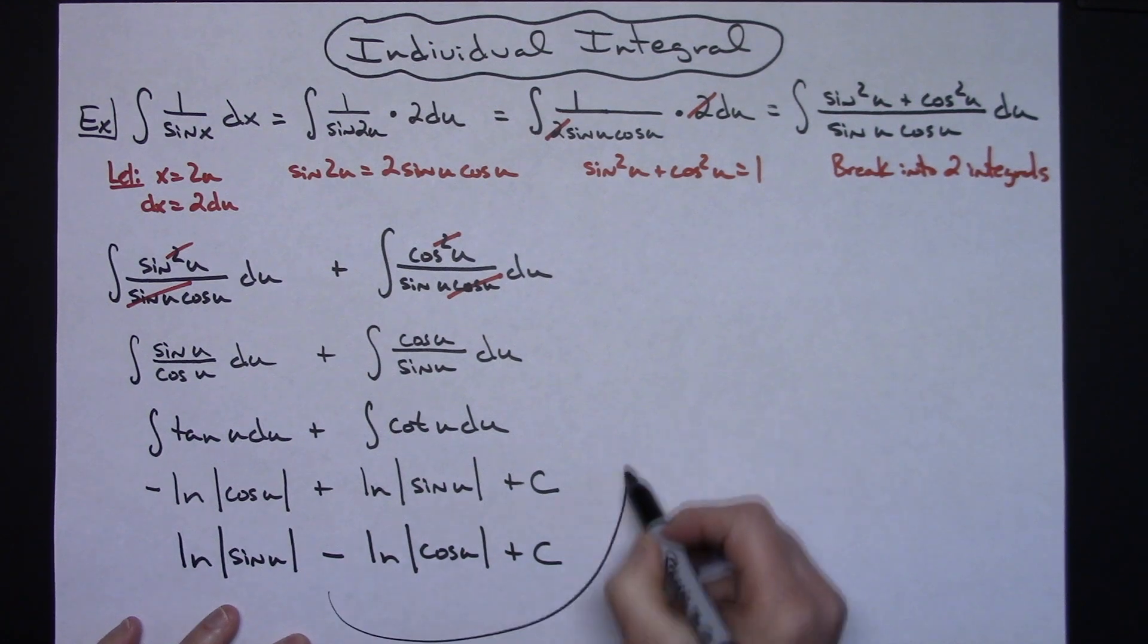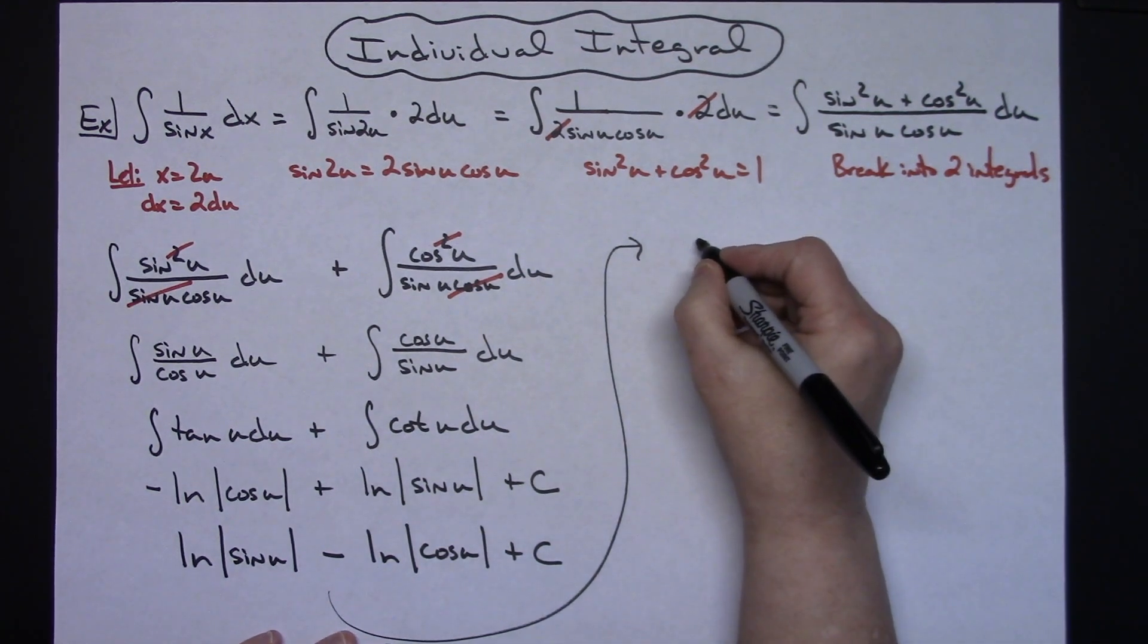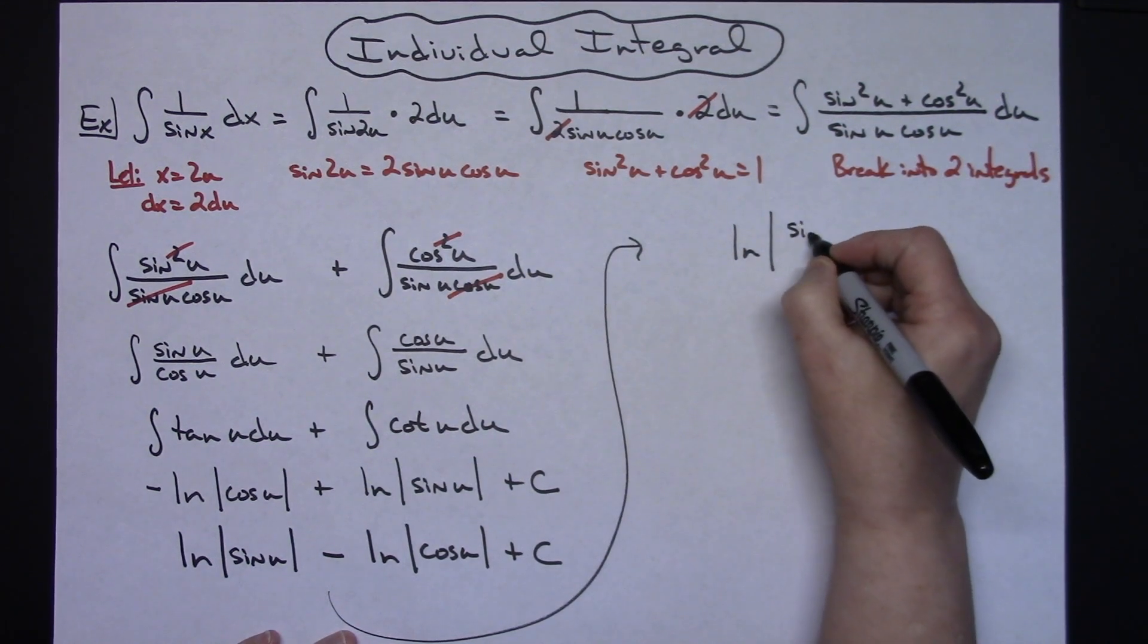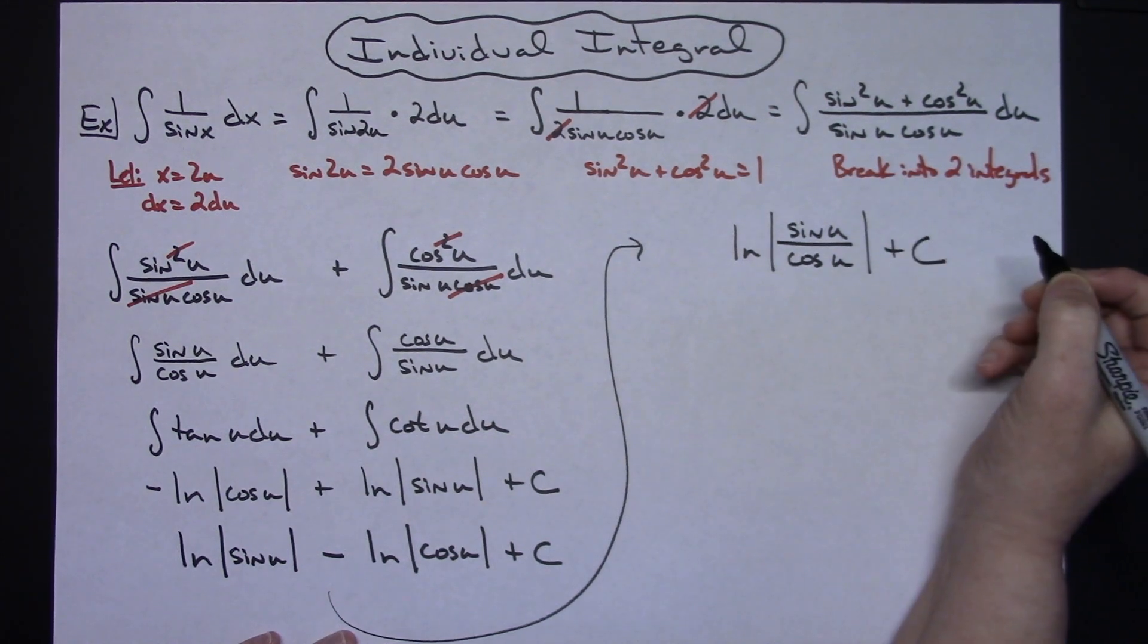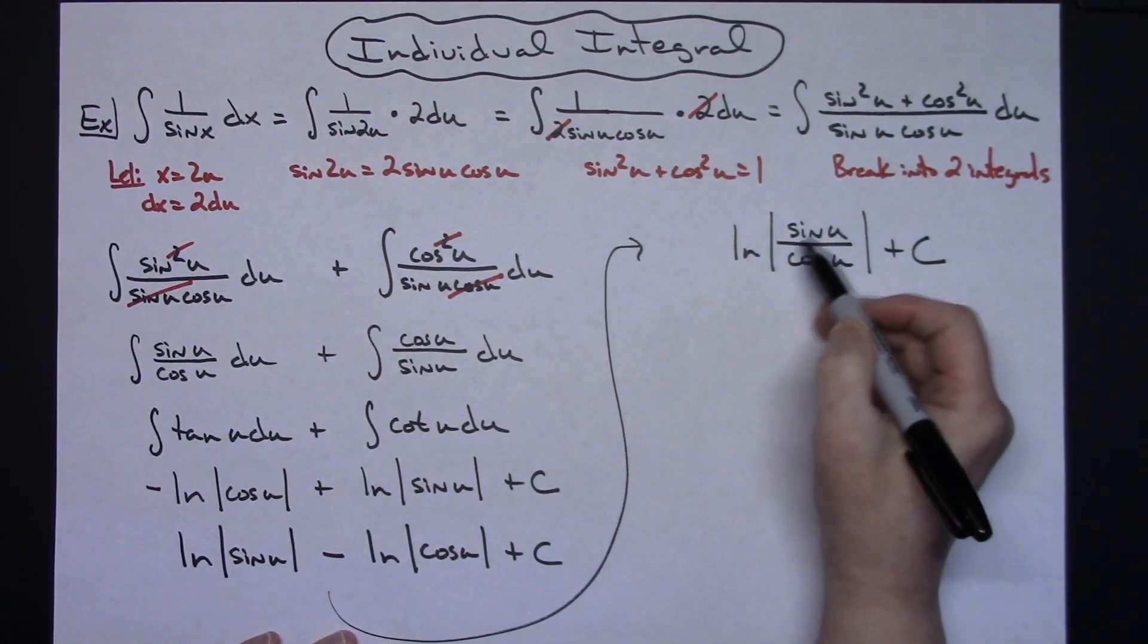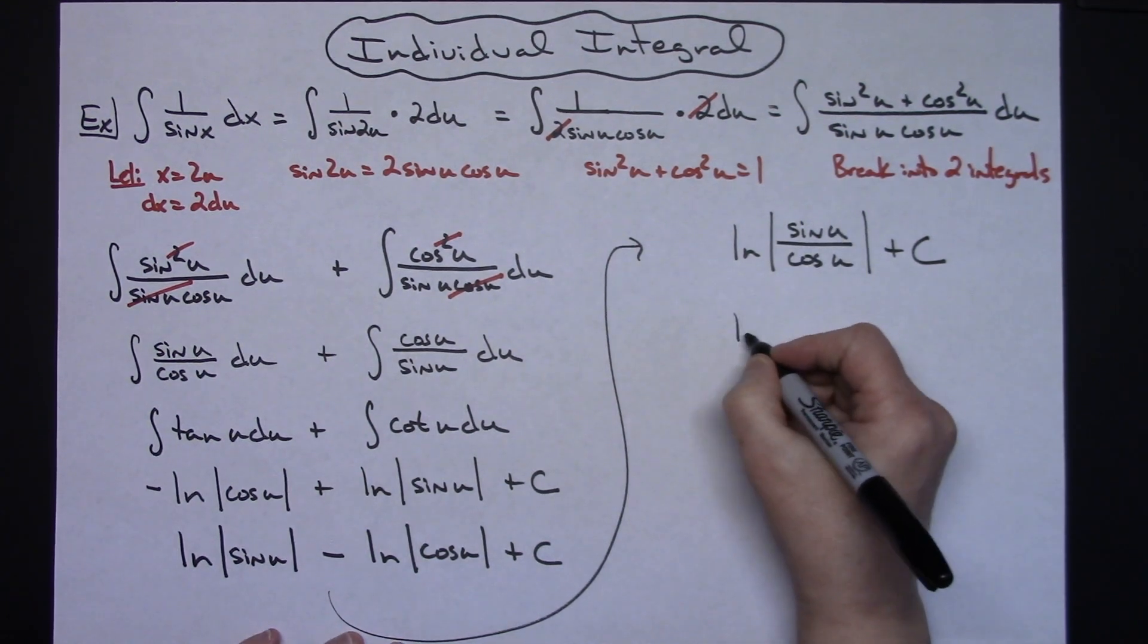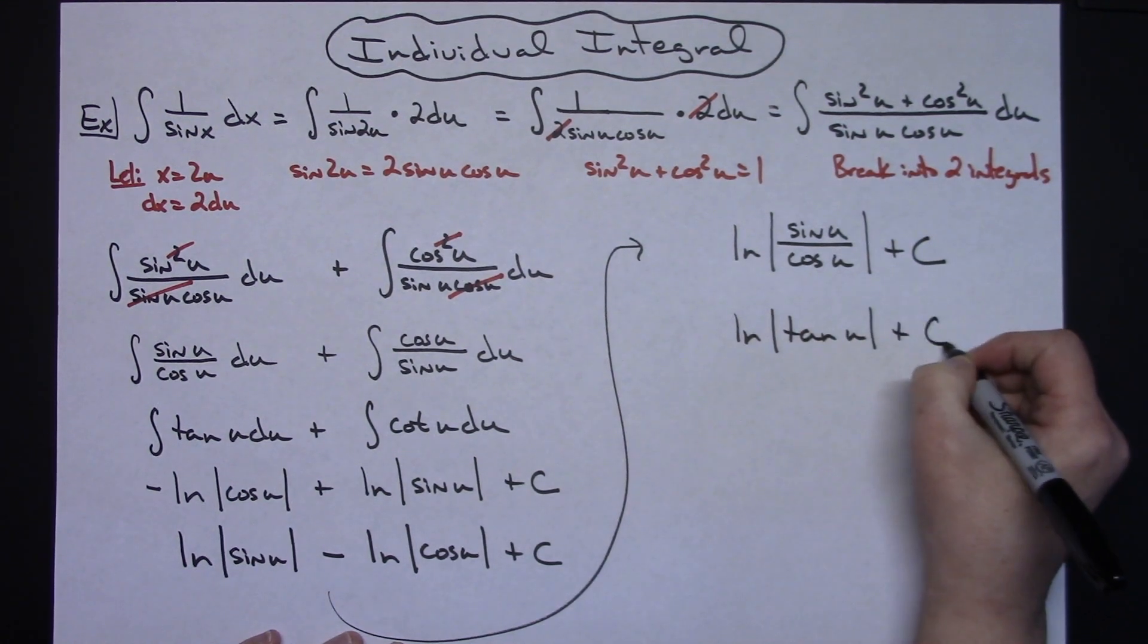Now let's come up here. Now this is I'm subtracting two logs with the same base, which means I can condense them into a single log and make it then the natural log. Natural log absolute value sine u over cosine u plus c. Now I've got a quotient identity there again that will give me a tangent. So I can replace that. Natural log absolute value tangent u plus c.